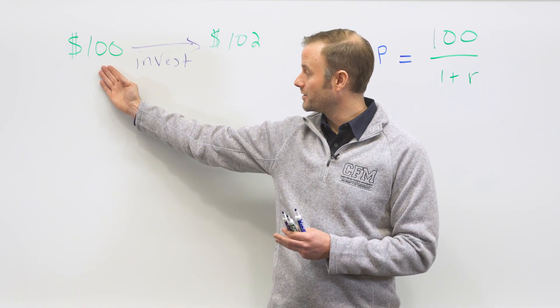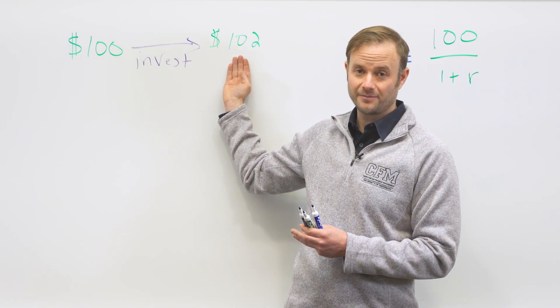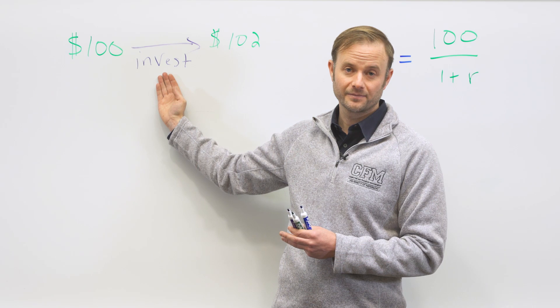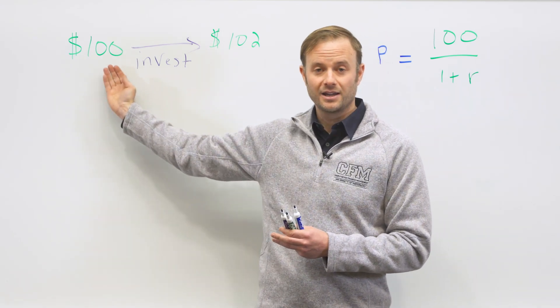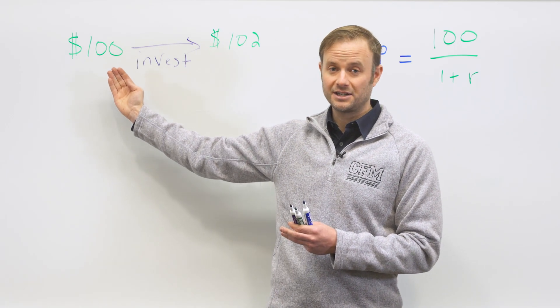From $100 today to $102 in one year's time represented a rate of return of 2%. If we want to go the opposite way and bring it back in time, we do what's called discounting.